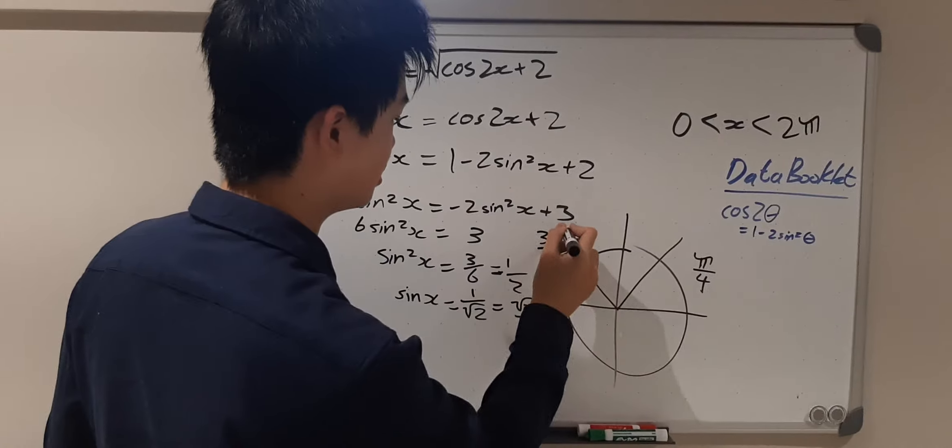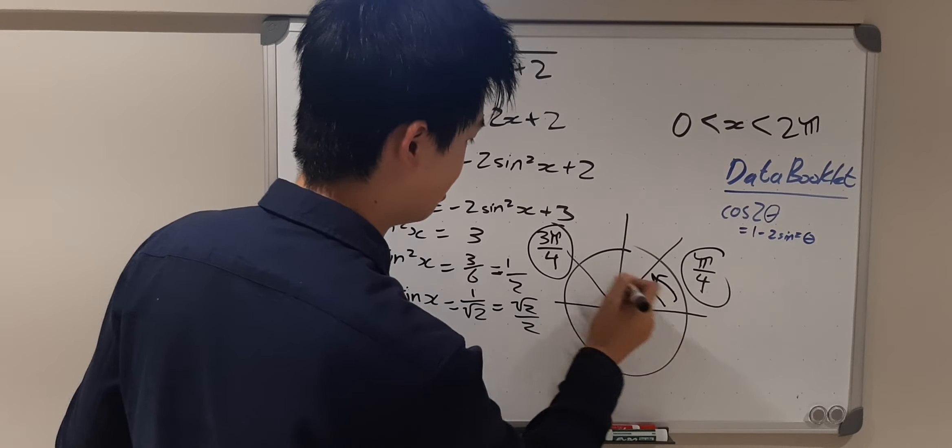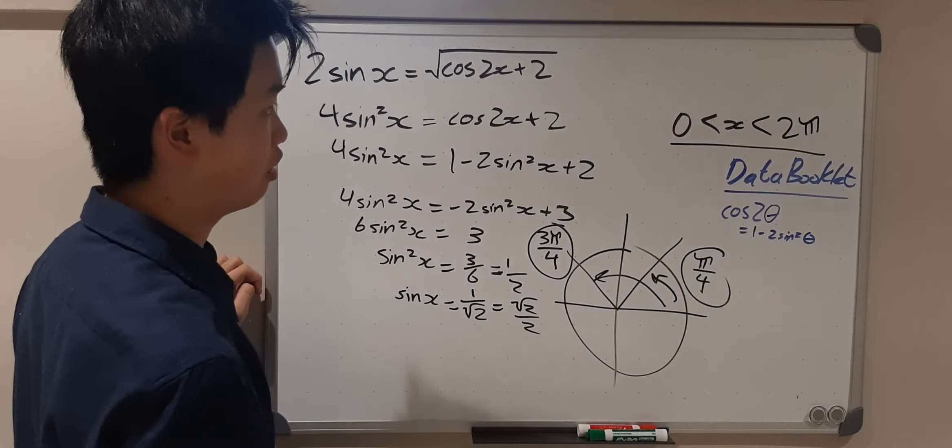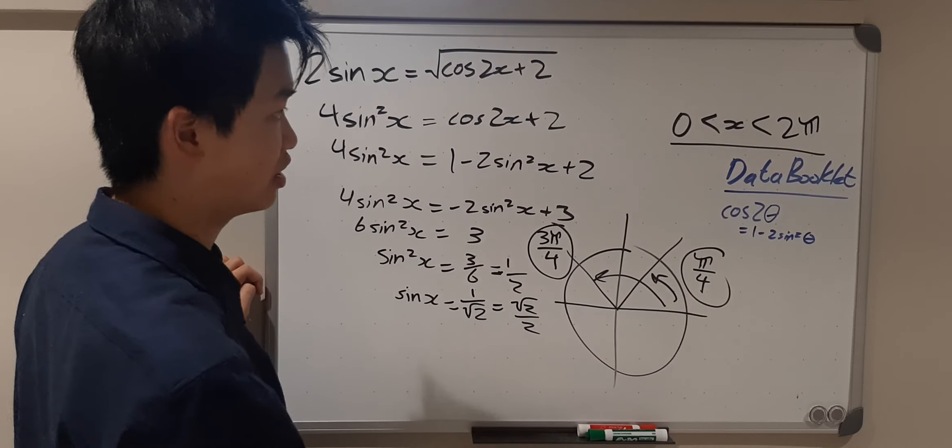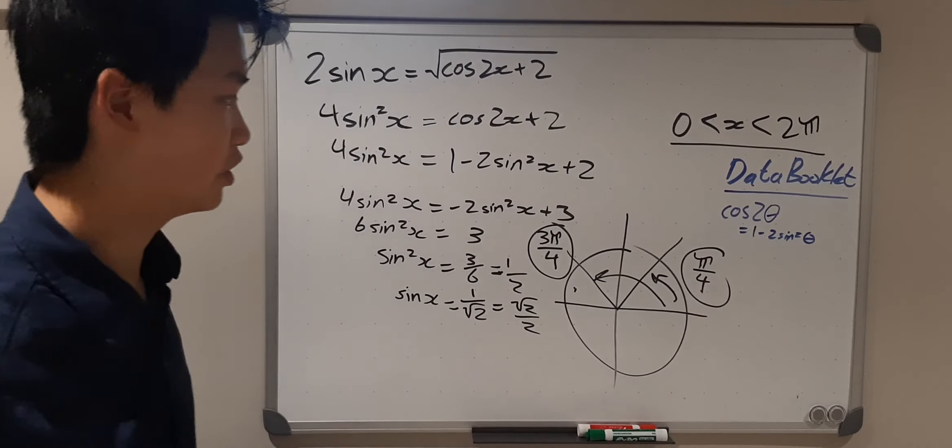so those are the answers. We don't have additional rotation after that because of the parameters here: 0 < x < 2π. These are within the parameters, so these are the two answers for x. Thank you.